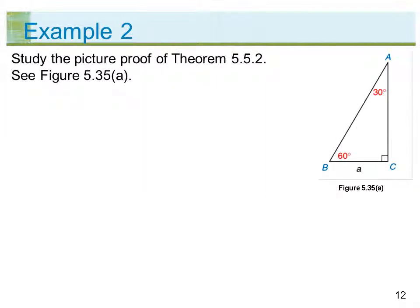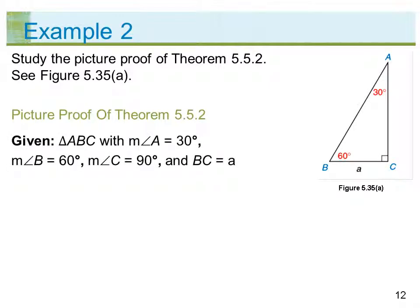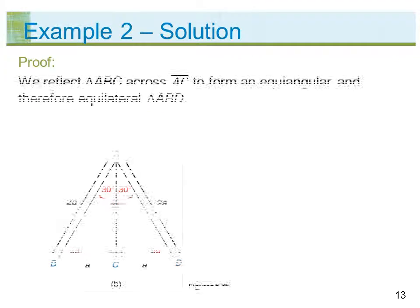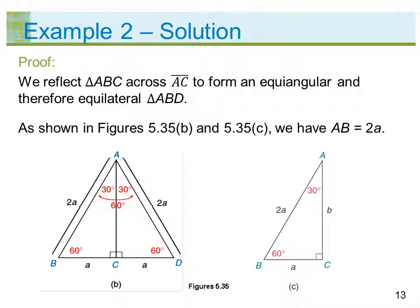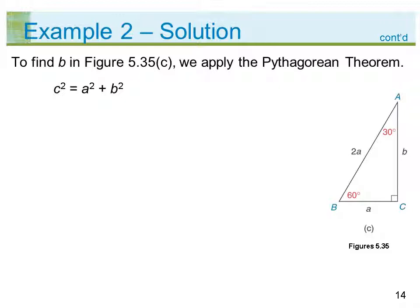Study the picture proof of Theorem 5.5.2, see figure 5.35A. Given triangle ABC with measure of angle A equals 30 degrees, measure of angle B equals 60 degrees, measure of angle C equals 90 degrees, and length BC equals a. Prove length AB equals 2a and length AC equals a square root of 3. We reflect triangle ABC across line segment AC to form an equiangular and therefore equilateral triangle ABD, as shown in figures 5.35B and 5.35C, giving length AB equals 2a. To find the remaining side, we apply the Pythagorean Theorem.